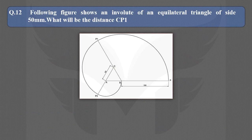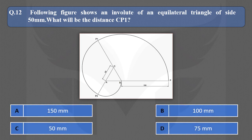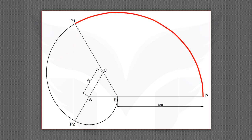Next question: The following figure shows an involute of an equilateral triangle of side 50mm. What will be the distance CP1? Looking at the highlighted portion of the curve, it has a radius of 150mm and center B. So BP equals BP1, which is 150mm. We want CP1, so subtracting BC (50mm) from BP1 (150mm) gives CP1 equal to 100mm. The correct option is B.